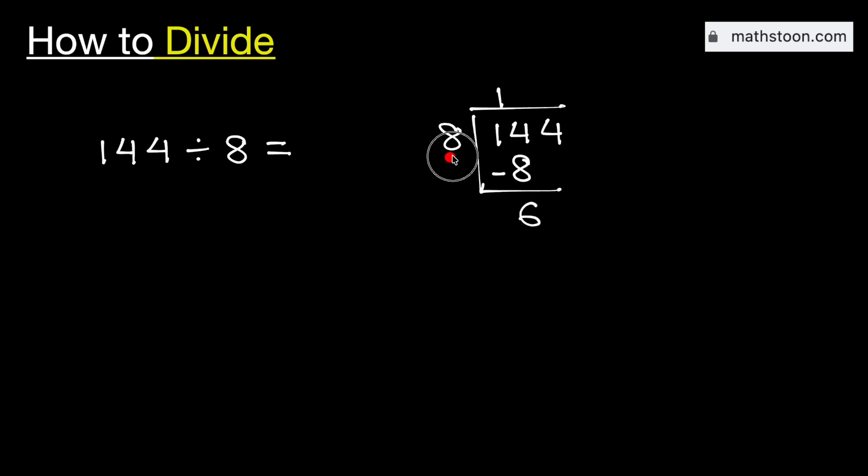Now, this 6 is less than 8, that is why we will bring down this 4 here. And we know that 8 times 8 is equal to 64. Subtract, we get a 0.